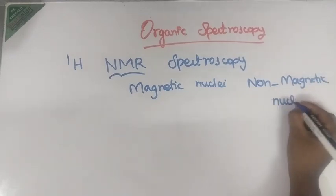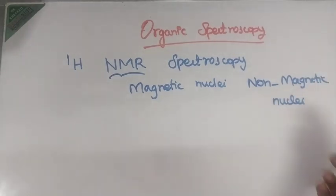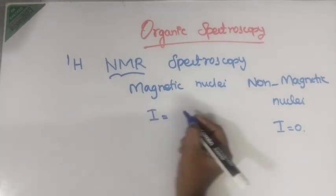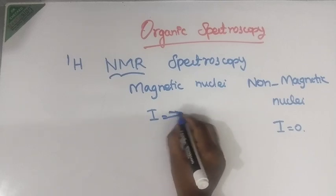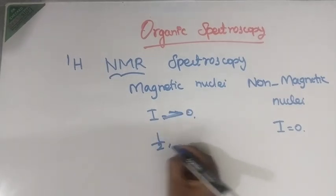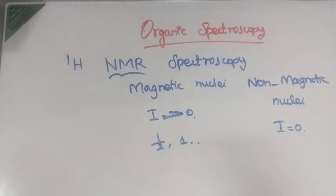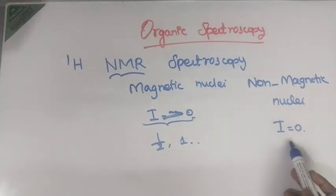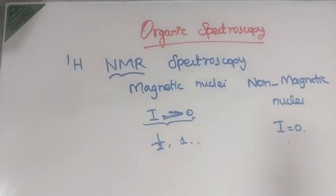For non-magnetic nuclei, the I value will be 0. For magnetic nuclei, I value will be greater than 0 — it may be either half or 1, like 3/2, 5/2, whatever it may be. So if a particular species should be NMR active, it should have some I value greater than 0. If the I value is 0, it is non-magnetic nuclei, it is NMR inactive.